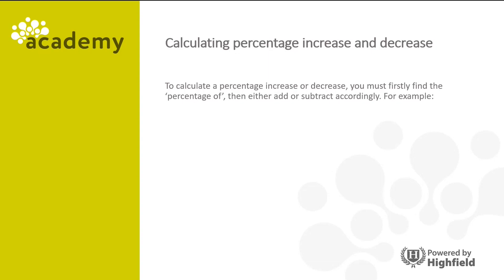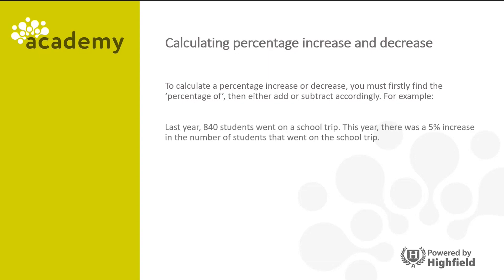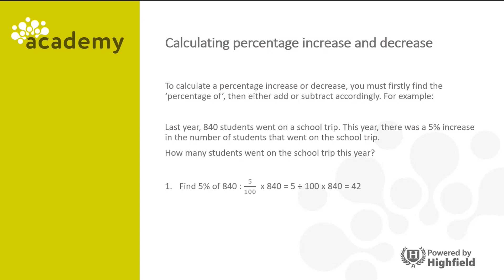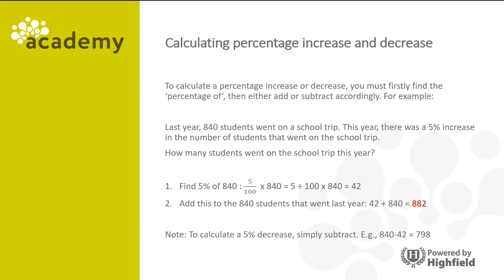To calculate a percentage increase or decrease, you must firstly find the percentage of, then either add or subtract accordingly. For example, last year 840 students went on a school trip and this year there was a 5% increase. Find 5% of 840: 5 divided by 100 times 840 equals 42. Then add: 42 plus 840 equals 882. For a 5% decrease, subtract instead: 840 minus 42 equals 798.